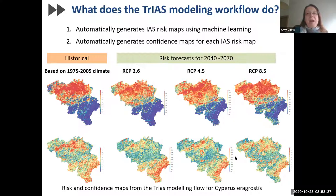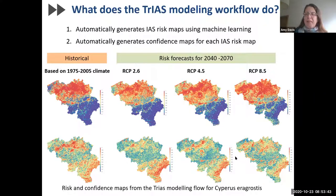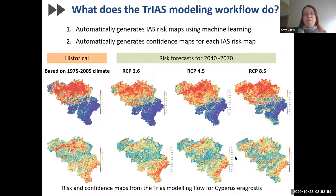Each one of these risk maps is accompanied by a map of confidence. These confidence maps are generated using conformal prediction, which is a statistical method that can assign confidence of predicted values with a guaranteed error rate, based on the data the model has already seen. This provides intuitive visualizations of how confidence of the model varies across space.